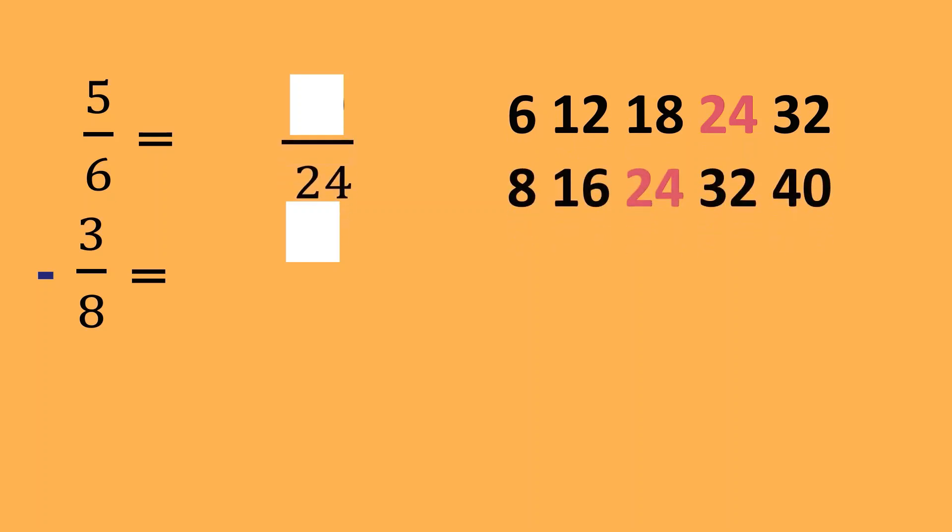Kagaya ng nauna kanina, susubukan din natin siyang gawin ng patayo or vertical. So, ganun din. Ililista natin yung multiples para makuha si LCD. Tapos ang LCD natin ay 24. So, 24 divided by 6 is 4. 4 times 5 is equal to 20. Next. 24 divided by 8 is equal to 3. And 3 times 3 is equal to 9. So, parehas na tayo ng denominator na 24. So, 20 minus 9 is equal to 11 over the common denominator 24. So, yun na yung ating final answer.